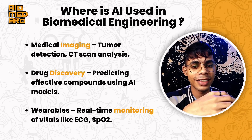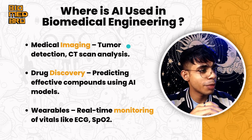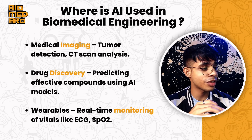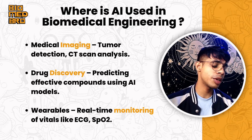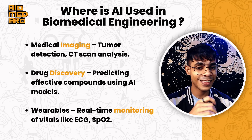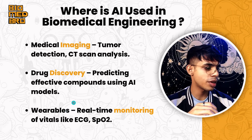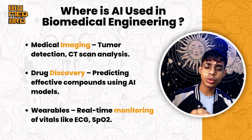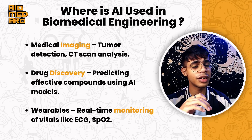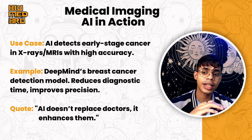Where is AI used in biomedical engineering? There are three major areas. First is medical imaging — for tumor detection, CT scan analysis, and processing images at a faster pace. Second is drug discovery — predicting effective compounds using AI models for drug testing. Third is wearables — real-time monitoring of vitals like ECG, SpO2, and pulse. So the three main uses are imaging, discovery, and real-time monitoring.